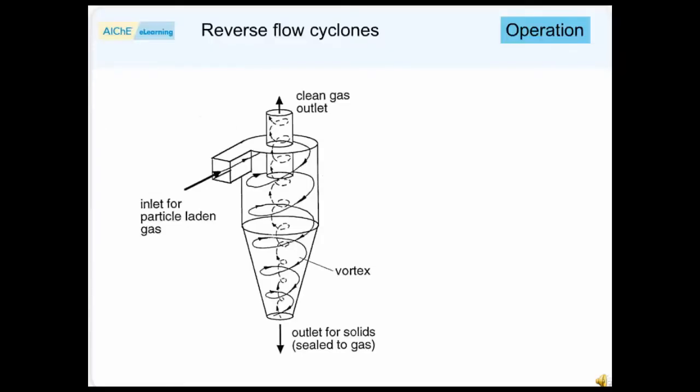The most common type of gas cyclone is known as the reverse flow type shown here. Inlet gas is brought tangentially into the cylindrical section, and a strong vortex is thus created inside the cyclone body.